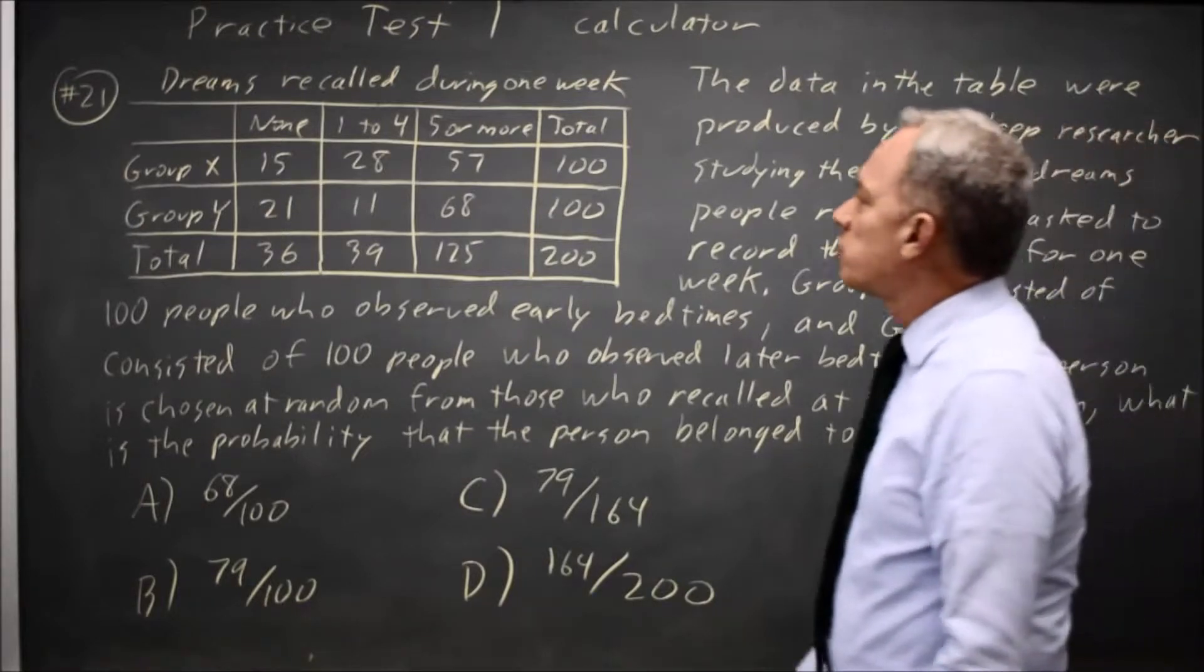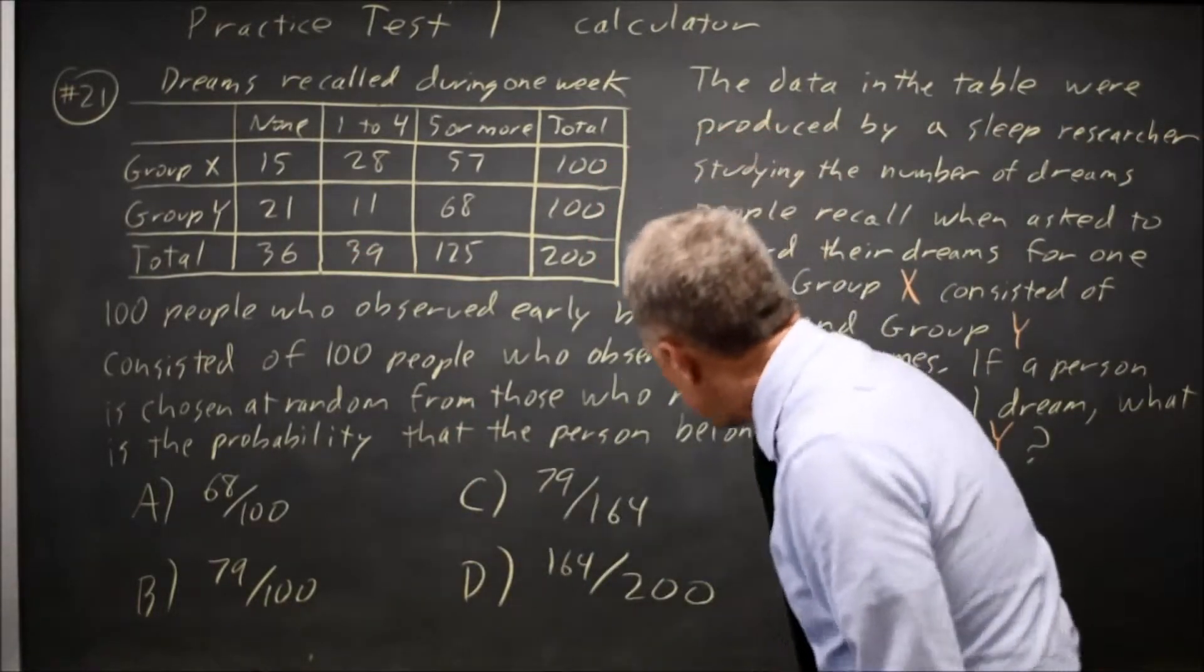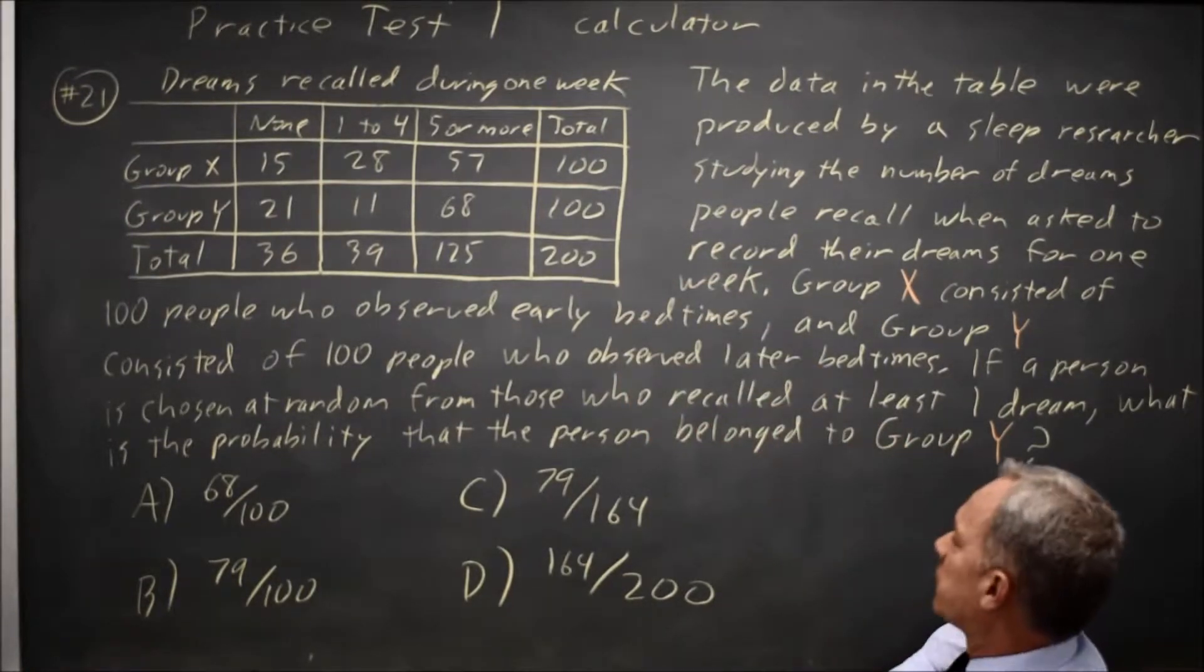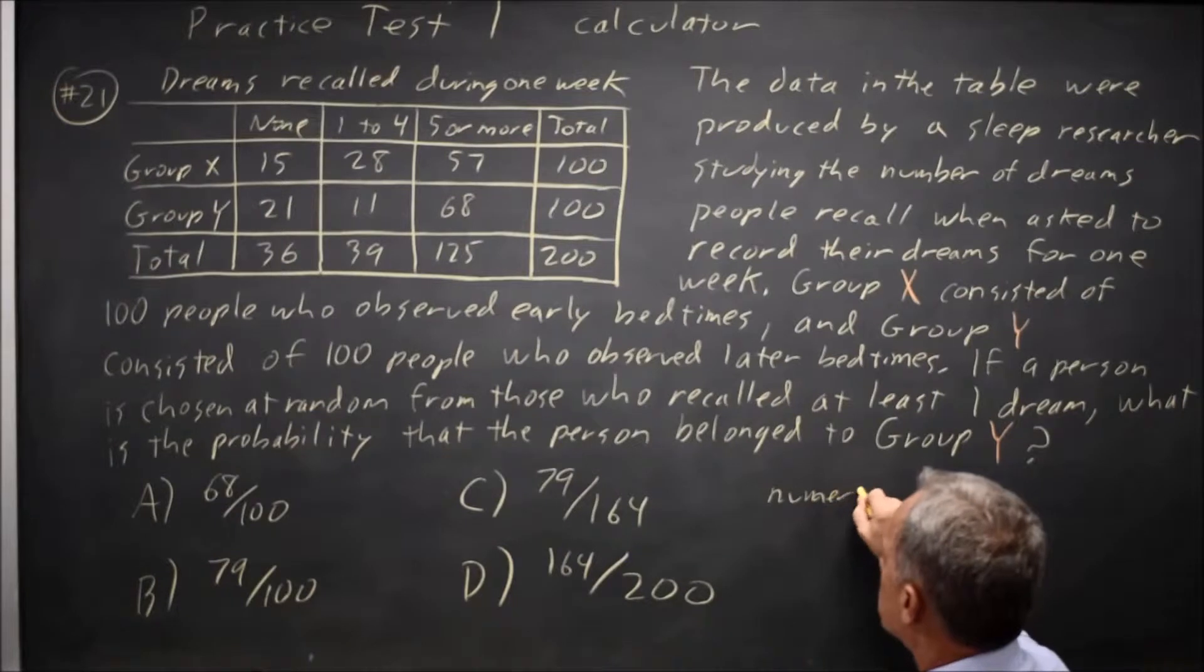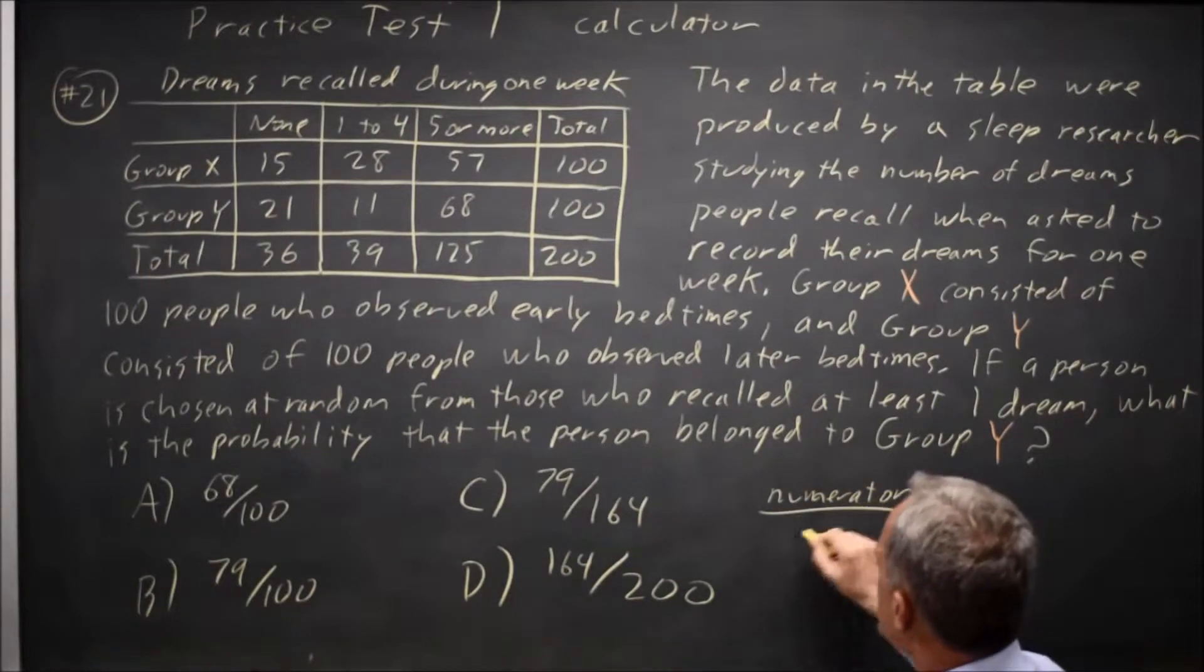When I'm looking for a probability from a table, I'd like to find the numerator and the denominator for that fraction. My numerator goes over the denominator.